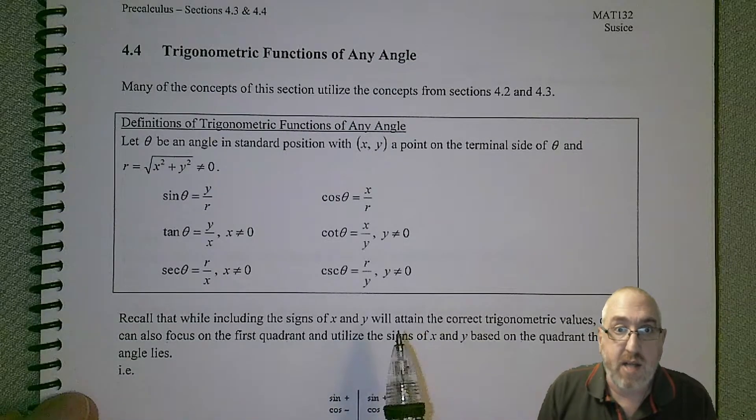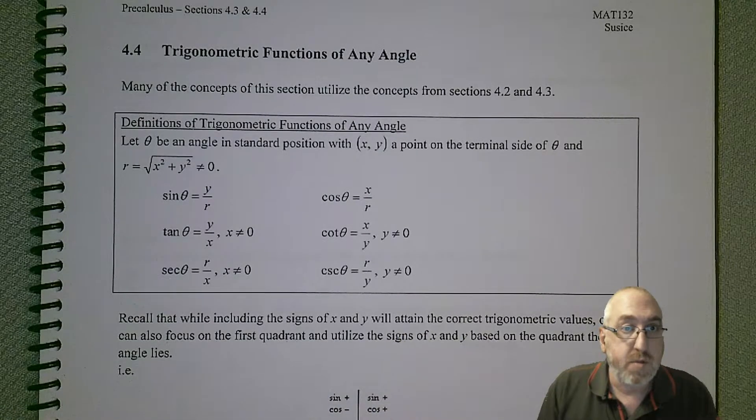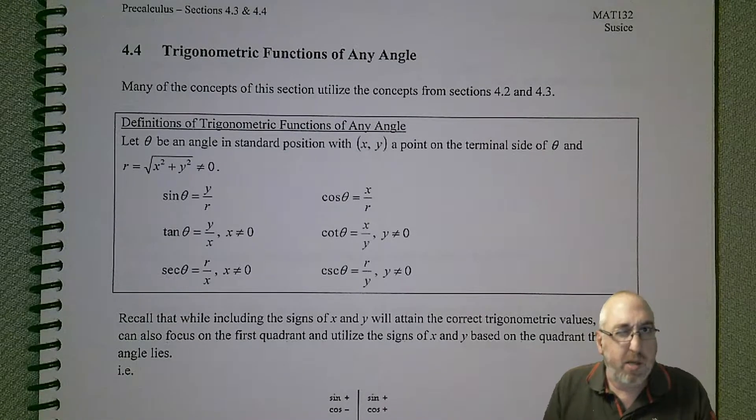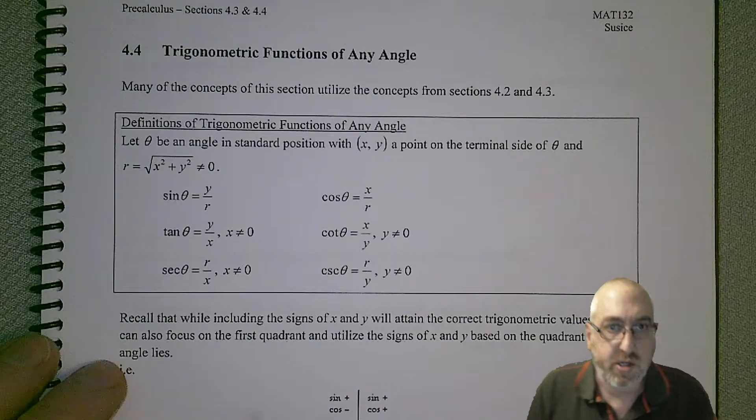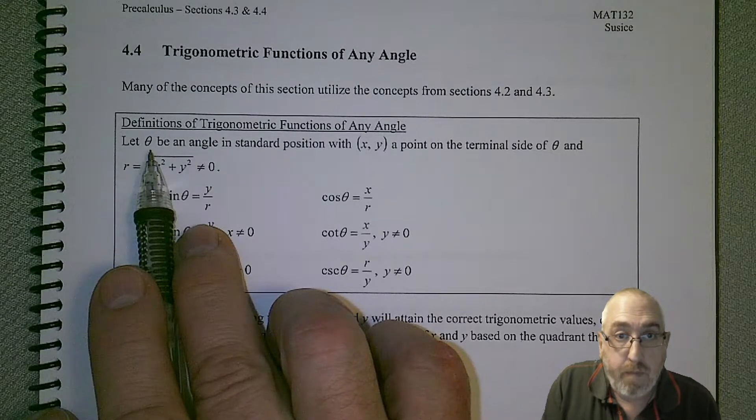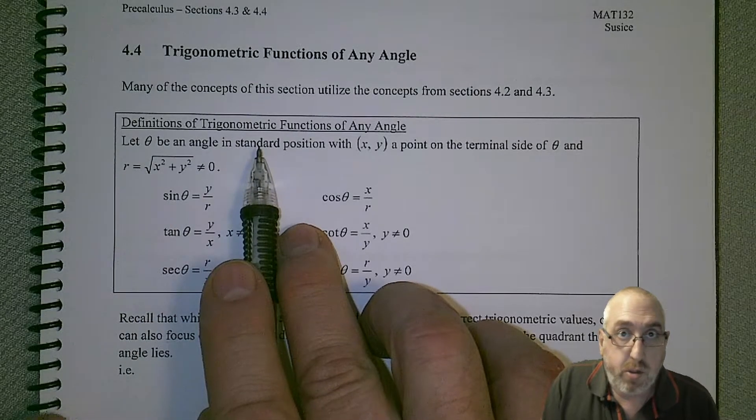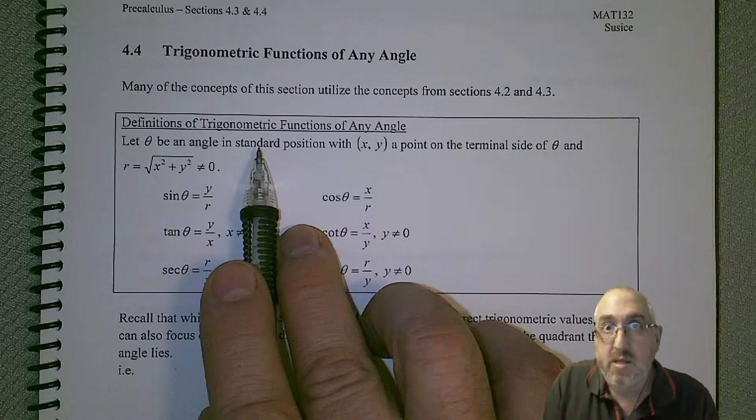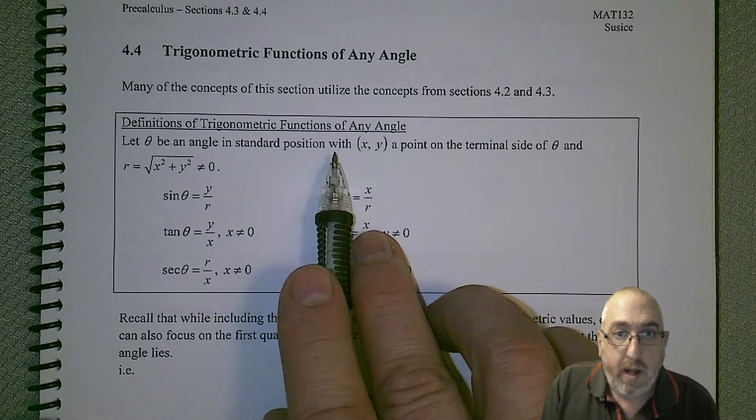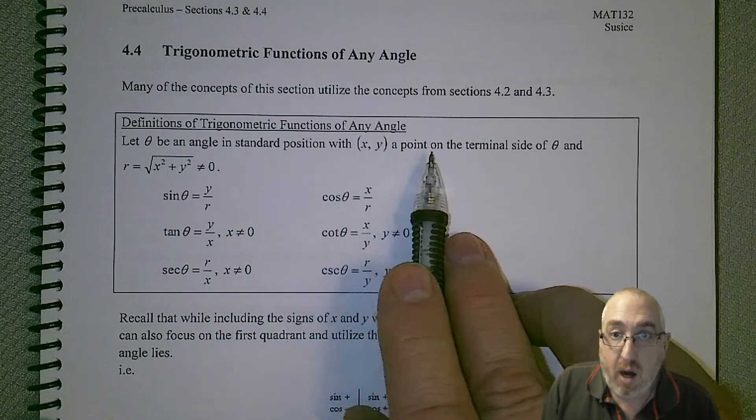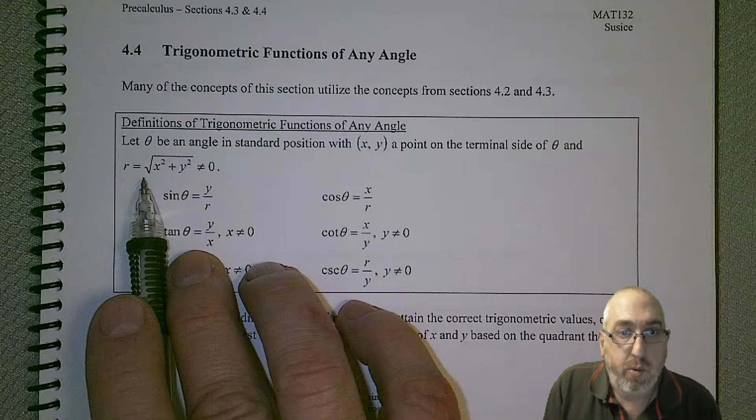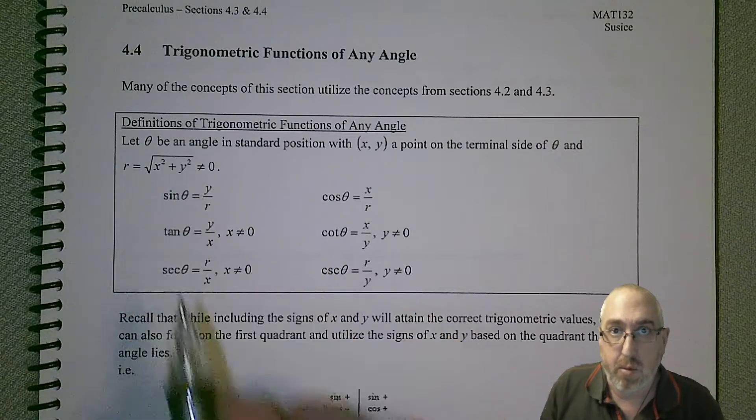We're going to have to first establish some variables and formulas, but a lot of these should be familiar once you see them in relation to the coordinate system. Theta is going to be our angle in standard position. Remember, the initial side is the positive x-axis, and the terminal side could be in any of the different quadrants. It's going to have a point (x, y) that's on that terminal side of angle theta, and r is going to equal the square root of x squared plus y squared, and of course that can't be equal to zero.